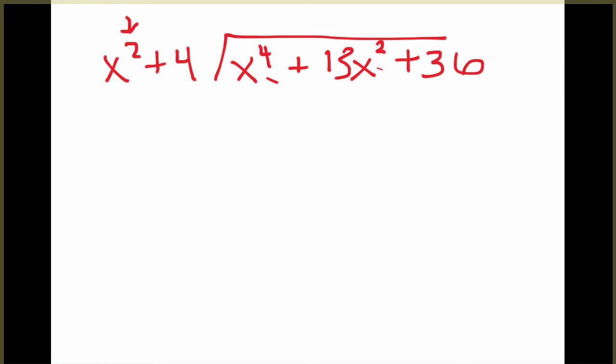So to perform this division, I think x squared times what will give us x to the fourth? It's another x squared. So that will go on top. And then I multiply the x squared by each piece here. So x squared times x squared is x to the fourth. x squared times 4 is 4x squared. And then we'll subtract.